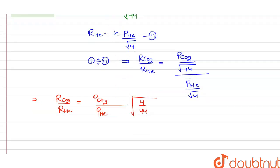On solving it, 4 divided by 44 is 1 by 11. On simplifying, we get rate of CO2 over rate of He equals pressure of CO2 over pressure of He times square root of 1 divided by 11.